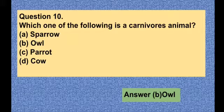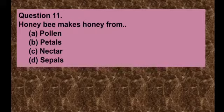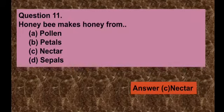Question number eleven: Honey bees make honey from — option A pollen, option B petals, option C nectar, option D sepals. The correct answer is option C. Honey bees make honey from nectar. Nectar is a flower juice which is called nectar.